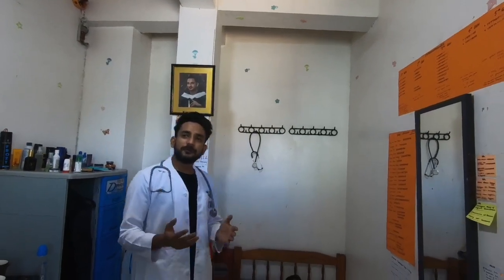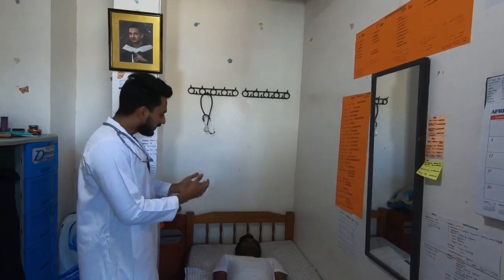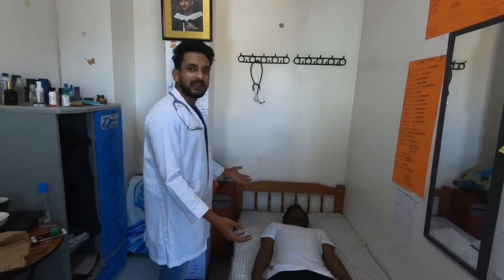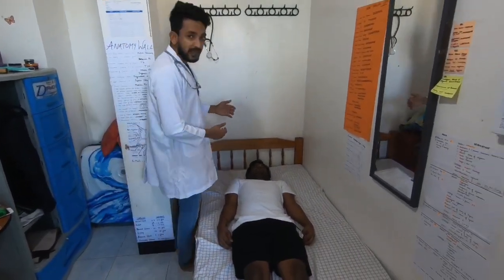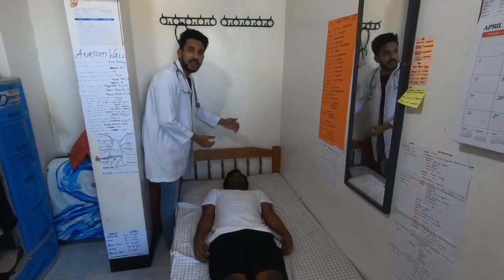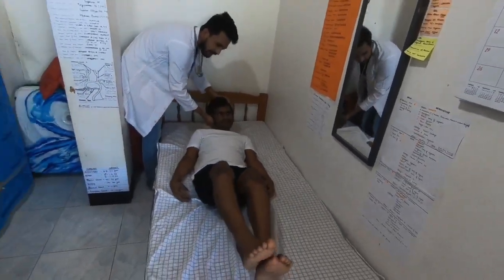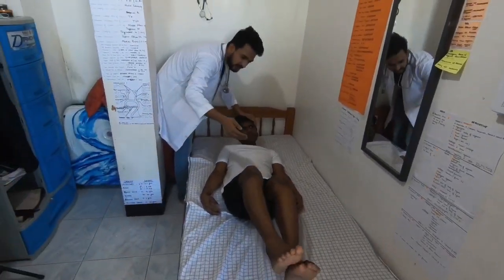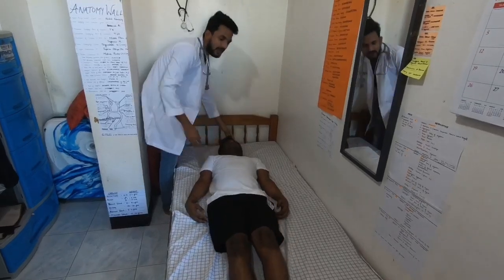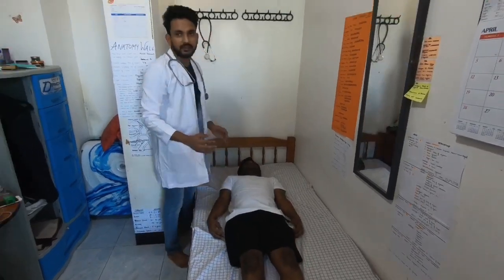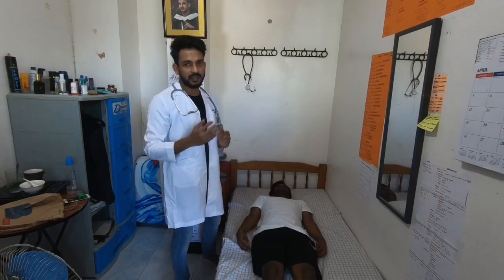To perform the Brudzinski sign, we make the patient lie down in a supine position and I am going to flex the neck of the patient. As you can see, that will cause hip and knee flexion. That means that is a positive Brudzinski sign.